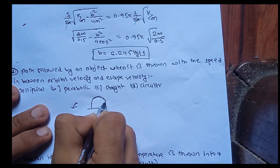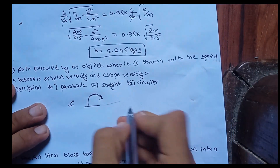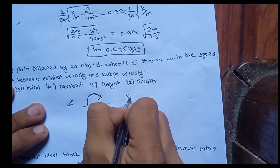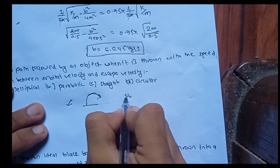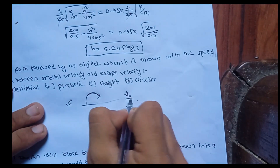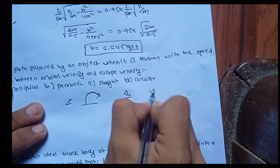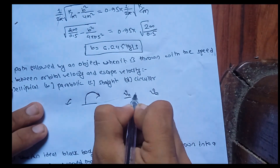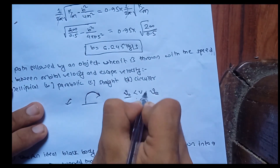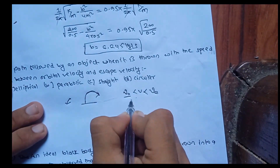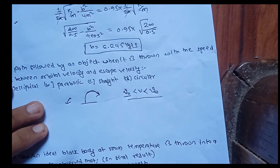The answer relates to orbital velocity. When the velocity is between orbital velocity and escape velocity, the path of the object is elliptical.